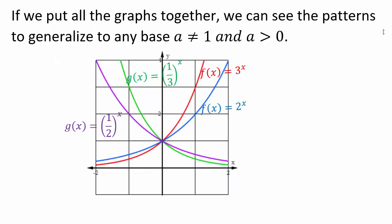Let's gather our observations. When the base a is greater than 1 — like 2^x or 3^x — the graph rises from left to right. When a is between 0 and 1 — like (1/2)^x or (1/3)^x — the graph falls from left to right. Also, when a > 1, a larger base gives a steeper graph: 3^x is above 2^x for x > 0. Similarly, (1/3)^x is steeper than (1/2)^x for x > 0.